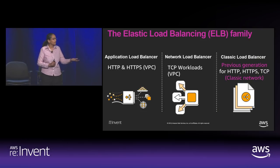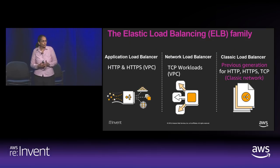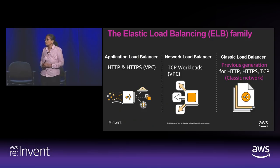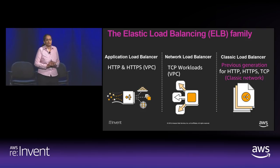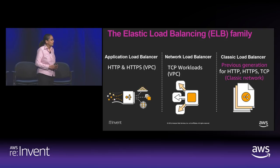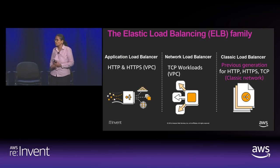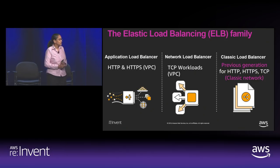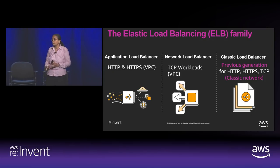The Application Load Balancer operates at a request level, terminates your TLS, supports HTTP and HTTPS traffic, and is well-suited for service mesh and container architectures. The Network Load Balancer functions at layer 4, suitable for high throughput, and can support millions of requests per second. The Classic Load Balancer, which we've had for a few years, supports both layer 4 and layer 7 but is not feature-rich.